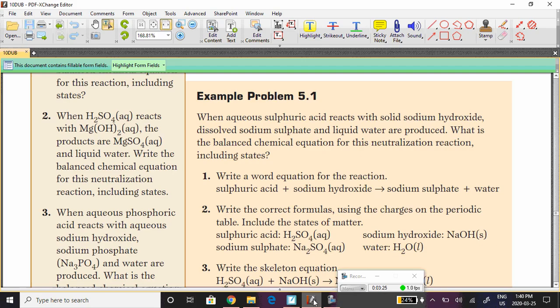So the textbook, number two right here: when H₂SO₄ (aq)—so this is sulfuric acid, an acid—reacts with Mg(OH)₂ (aq)—this is a base, magnesium hydroxide—the products are MgSO₄ (aq).